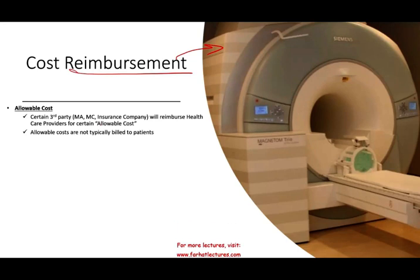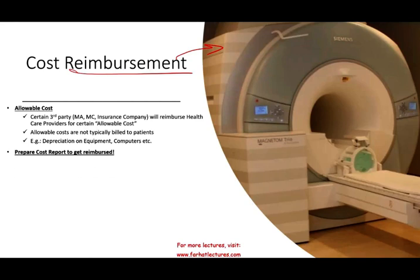So when the health care provider buys something like an MRI, they're not going to bill the customer for that. What's going to happen is those costs — some of these costs — get reimbursed by either Medicare, Medicaid, or the insurance company, like depreciation on equipment, computers, and so on. So what would the health care provider have to do? They have to prepare costs to get reimbursed. In order to be reimbursed, you have to tell them what you incurred in terms of cost.